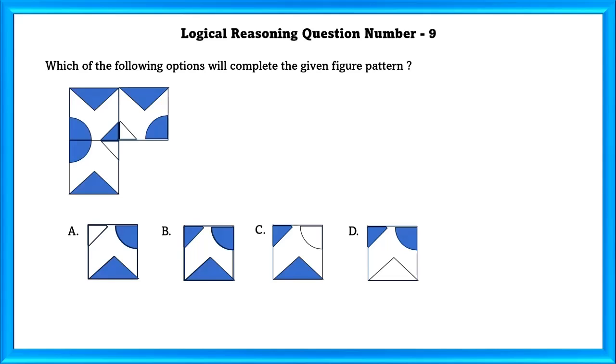Logical Reasoning Question Number 9. Which of the following options will complete the given figure pattern? First, let's try A. As we can see, this does not fit because 1 by 4th of the square is not being shaded. Now we will try B. As we can see, B fits into place because all the necessities are fulfilled.